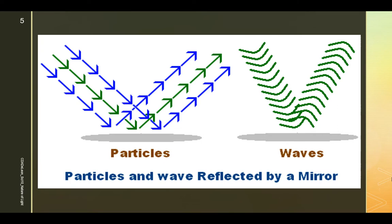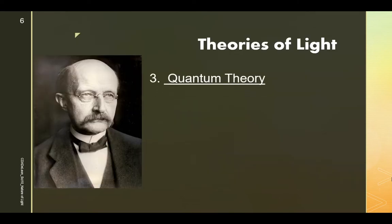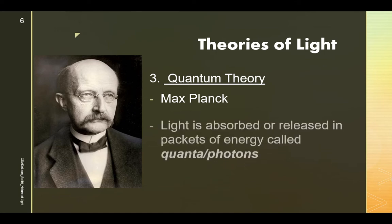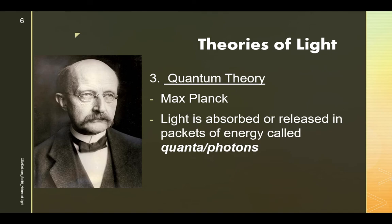The third theory of light is the quantum theory, according to Max Planck. Max Planck was a German theoretical physicist who discovered the quantum of action, now known as Planck's constant, symbolized by the letter h. In the 1900s, this work laid the foundation for quantum theory, which won him the Nobel Prize for Physics in 1918.